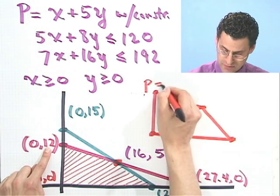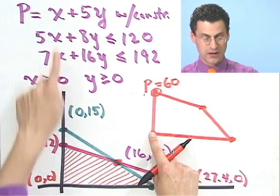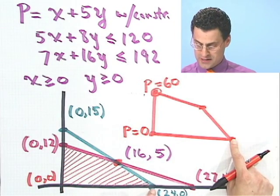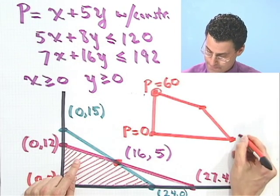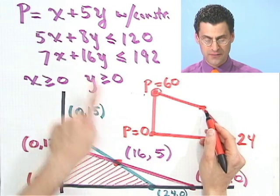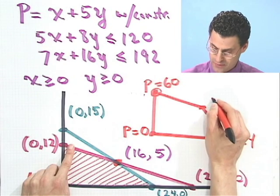So if I plug in 0 for x and 12 for y, I would see 60 for p. So p would equal 60 at this point. If I plug in 0, 0, I just see 0. So p would equal 0. If I plug in 24, 0, I see 24. And if I plug in 16, 5, and work that out, we'd see 41.